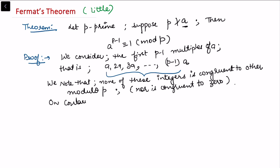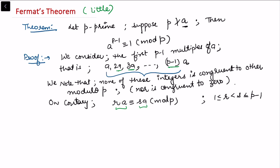To prove this, suppose on the contrary that two of these integers are congruent to each other. Say ra is congruent to sa modulo p, where these are multiples of a. Without loss of generality, assume r is less than s, and both r and s lie between 1 and p minus 1. We can then cancel a from both sides.